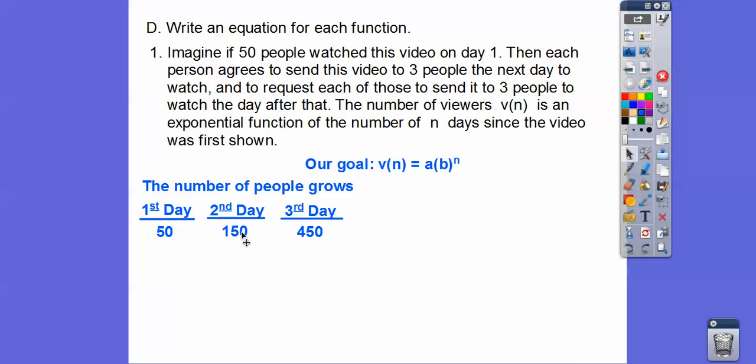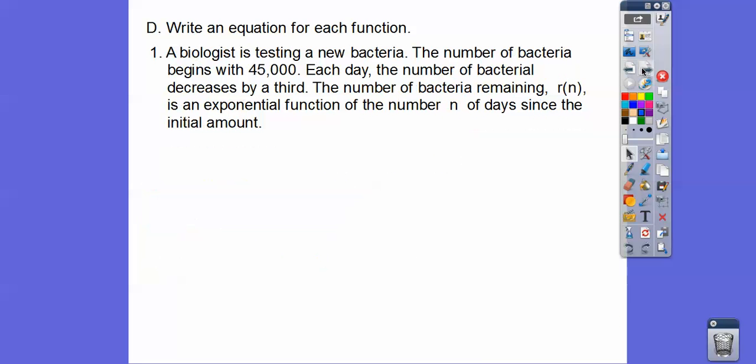And then we do it times 3, and then those 150 send it to 3 more people. So now it's 450 times 3 times 3 times 3. Here's the first term, and then the b is 3 right there. So we get v sub n equals 50 times 3 to the nth right there. Here's one more.